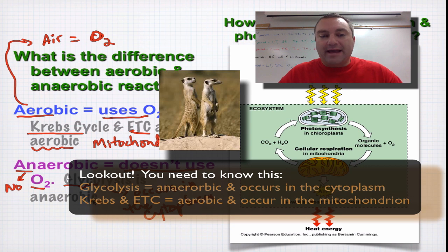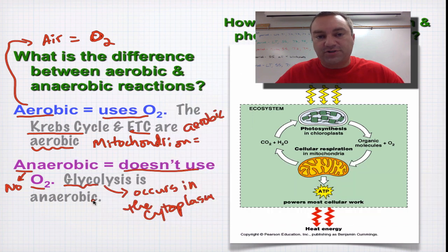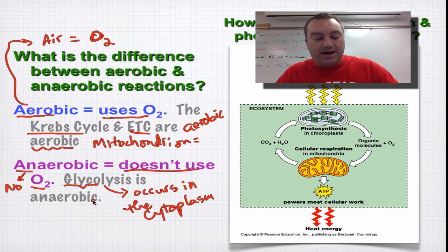One, the anaerobic part of cellular respiration is glycolysis. That occurs in the cytoplasm. Two, the Krebs cycle and the electron transport chain, those two things that occur inside the mitochondrion, those are considered aerobic, and you have to have oxygen to do those two. So anything that occurs inside the mitochondrion requires oxygen.